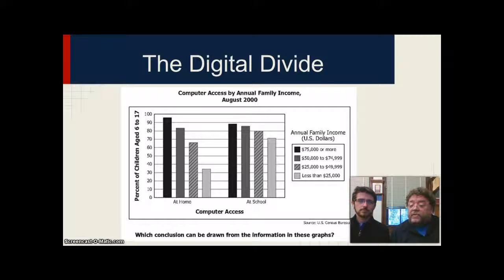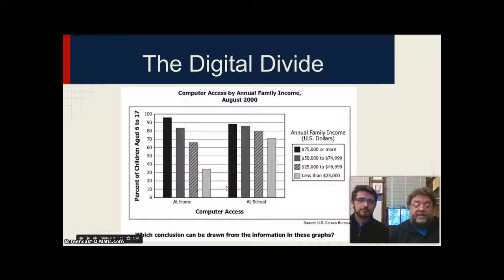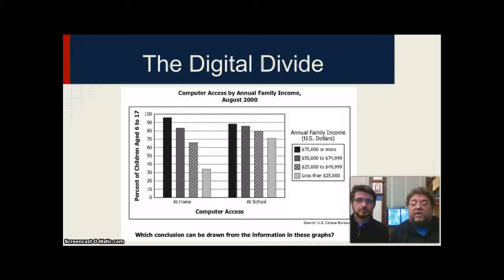Here's a slide giving us details about the digital divide and this is something our students face. At home, students whose families have an income less than $25,000 — students from age 6 to 17 — have access at approximately 32%. When these students get to school, the school helps close that digital divide: students of the same income level reach nearly just above the 70% level.